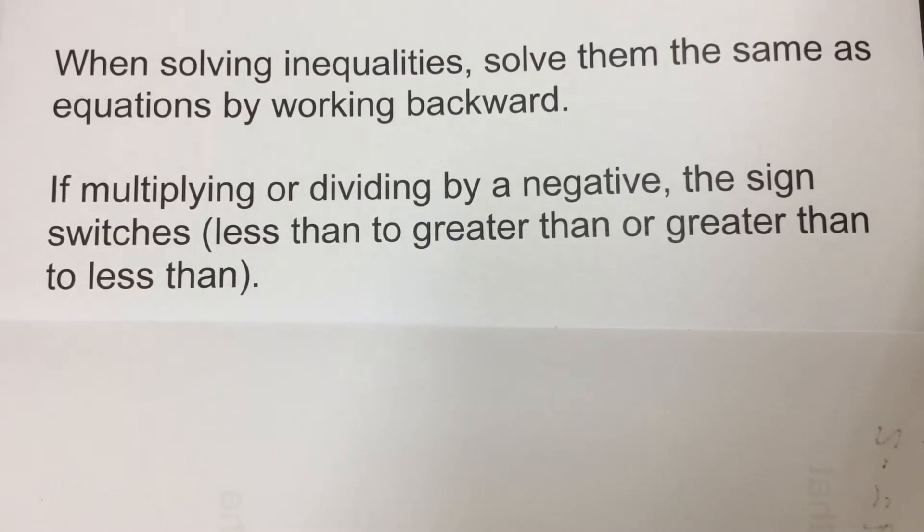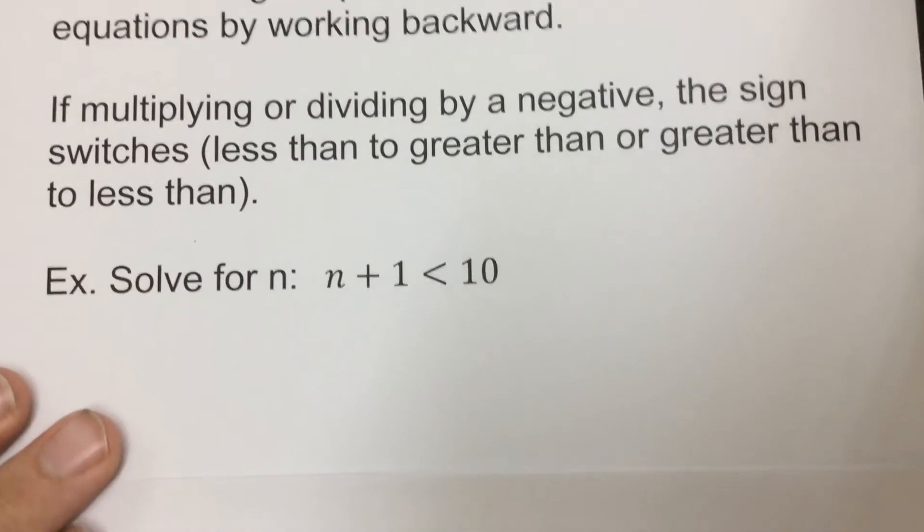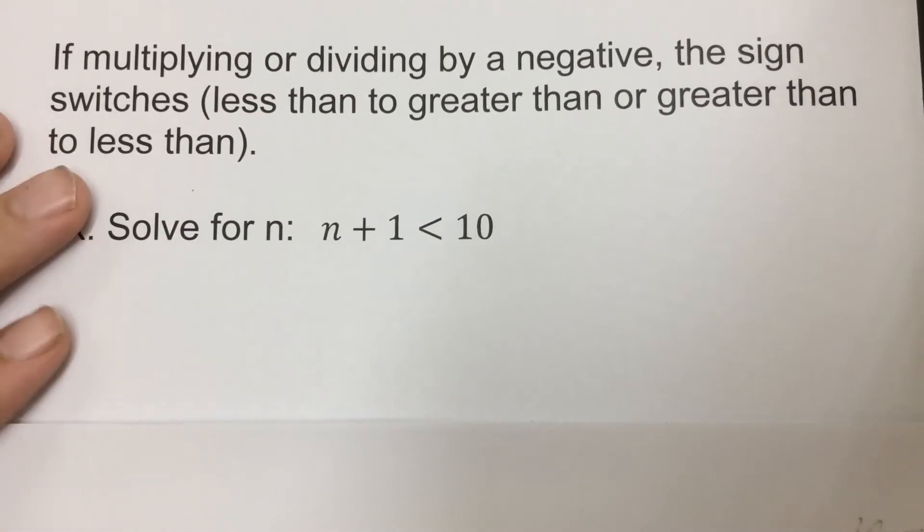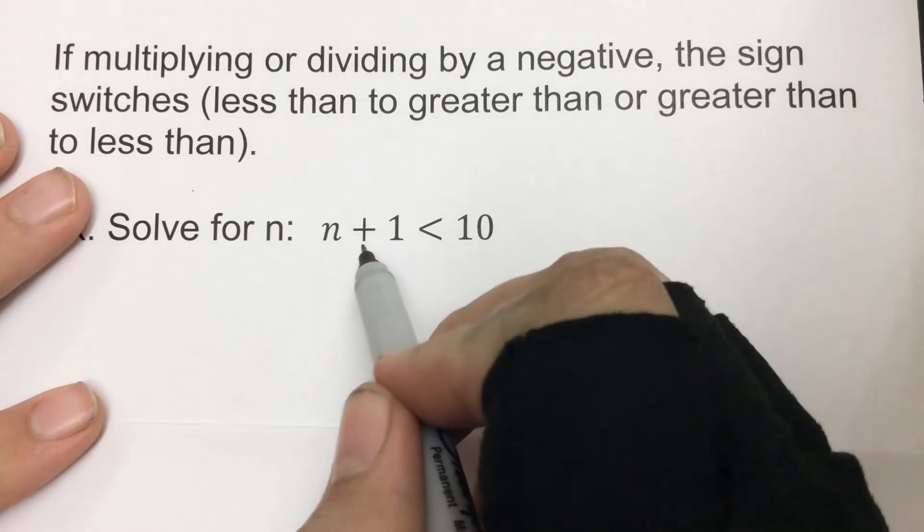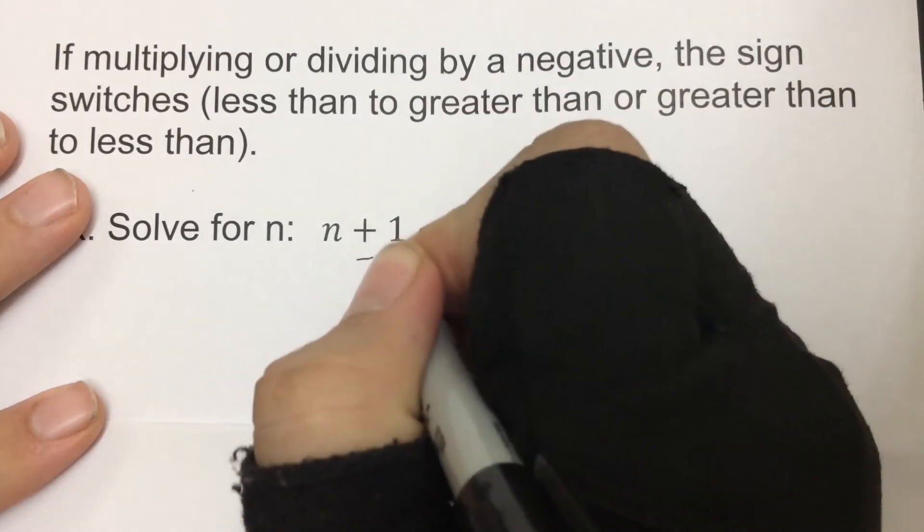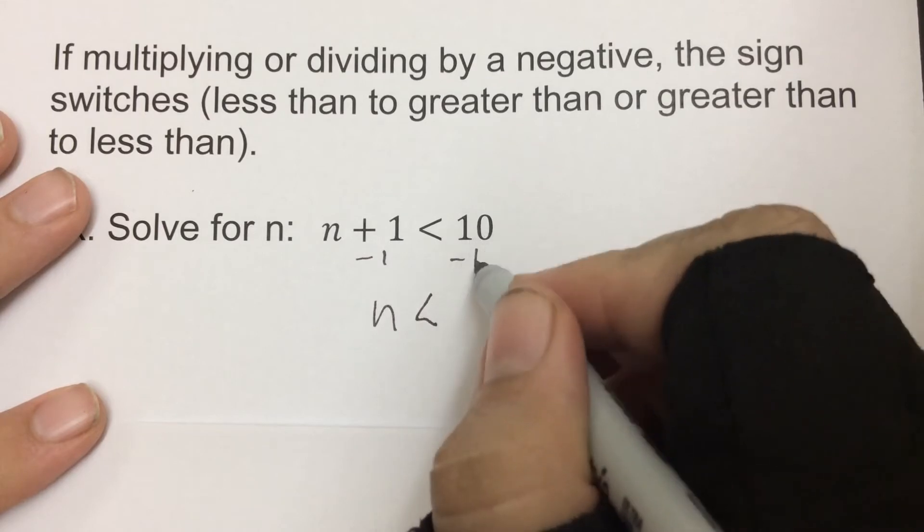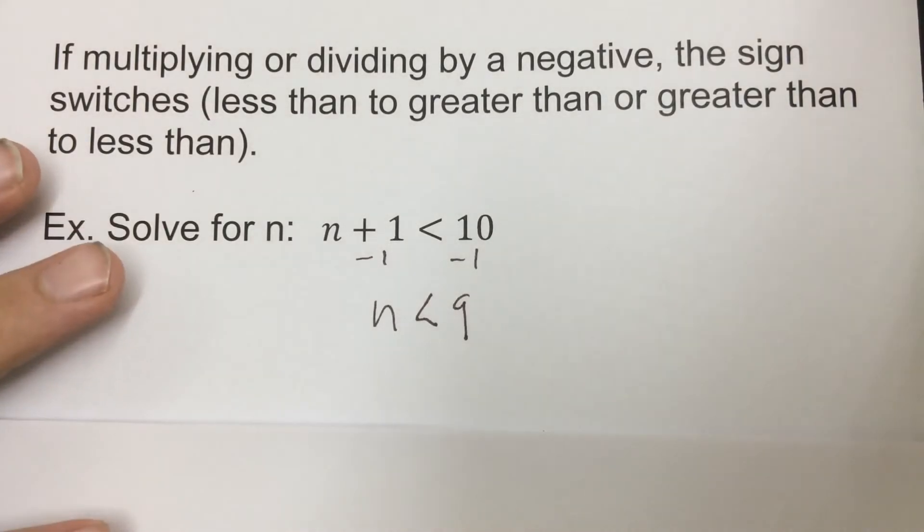So if we do our first one here, solve for n. We have n plus 1 is less than 10. So when you get n by itself, we're working backwards. So opposite of plus 1 would be to minus 1. So n would be less than, well, 10 minus 1 would be 9, and that would be your answer.